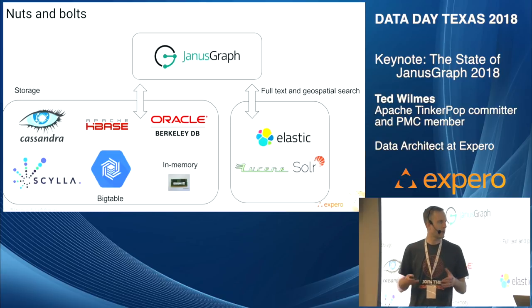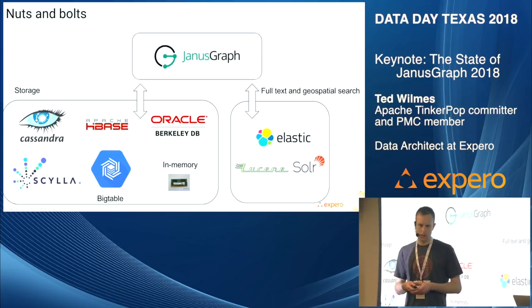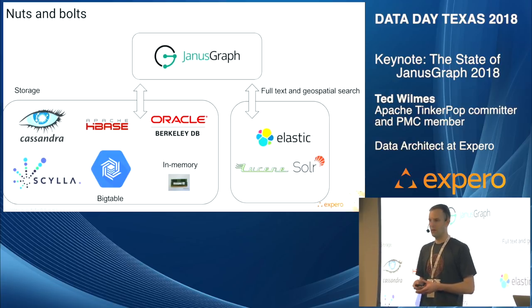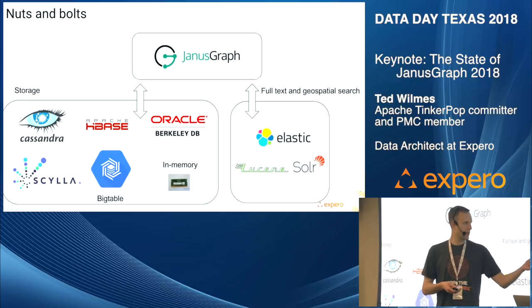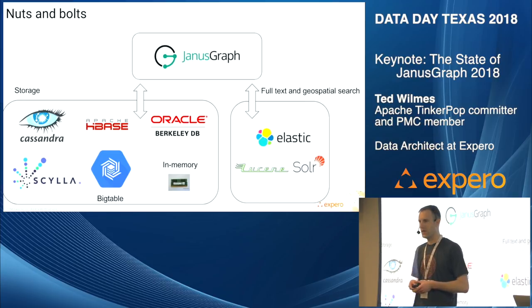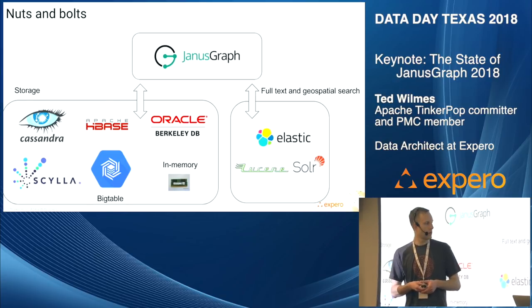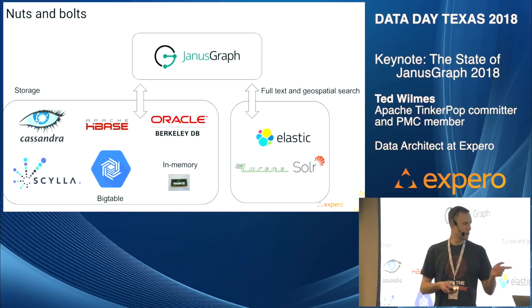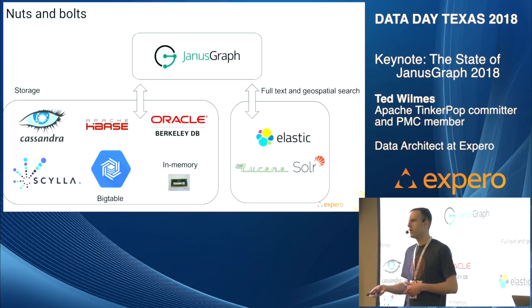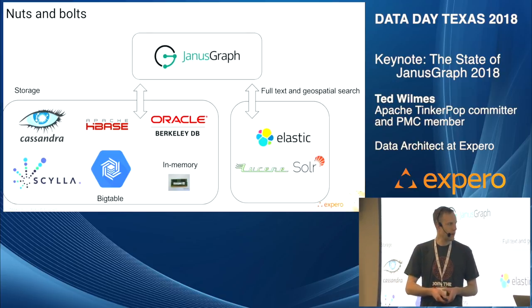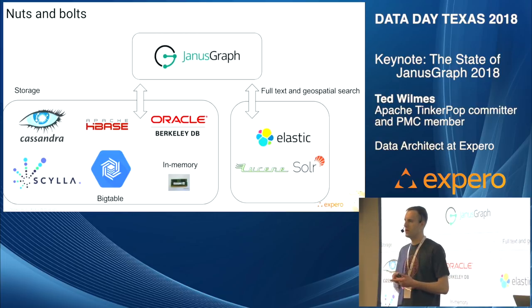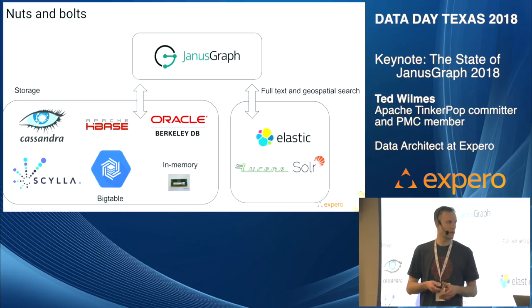Now into the nuts and bolts. JanusGraph has this pluggable architecture — JanusGraph sits on top, it's written in Java, runs in its own JVM, and connects to a storage layer because Janus itself doesn't store any data. We support Cassandra, Apache HBase, Oracle BerkeleyDB, Scylla, Google Bigtable, and Janus also has its own in-memory option. On the indexing side — not required, but if you want advanced functionality like geospatial search or full-text search — you can plug in an indexing backend like Elasticsearch, Solr, or Lucene.